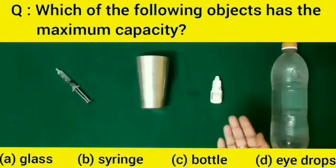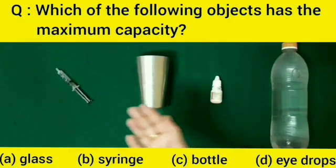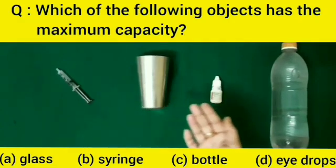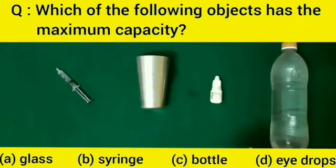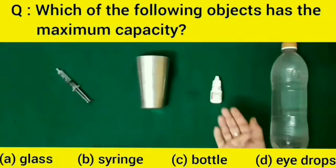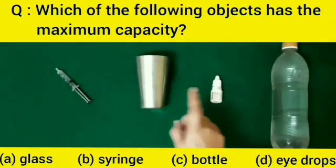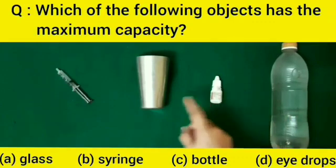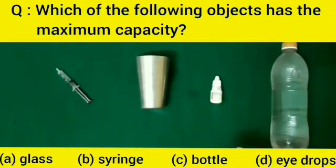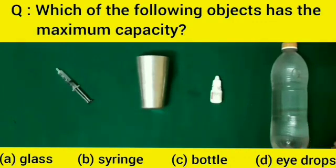Today's pass question: some objects are given — which of the following has the maximum capacity? The capacity of a syringe and an eyedropper is always in milliliters, and the capacity of the glass is less than the one-liter water bottle. So the one-liter water bottle has the maximum capacity. The correct answer is option C.